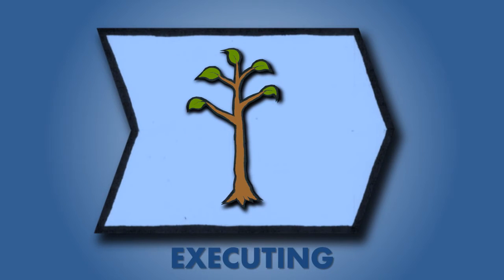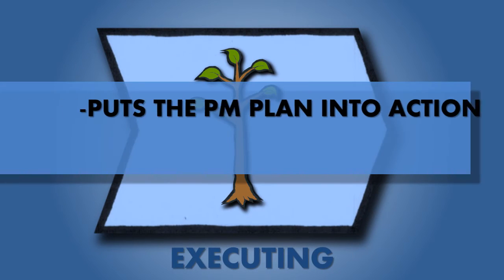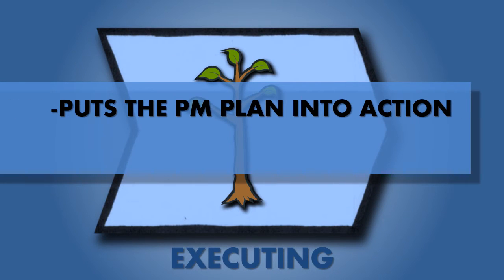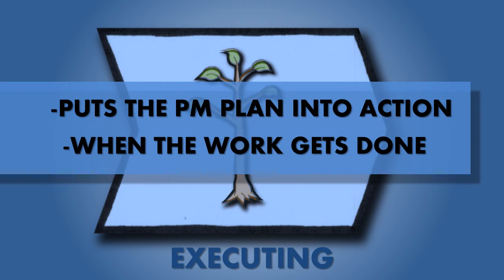The executing process group takes the project management plan and puts it into action. This is when all the project work gets done. During this process, resources are combined with the project management plan to carry out the plan for the project.